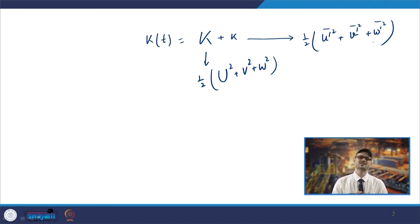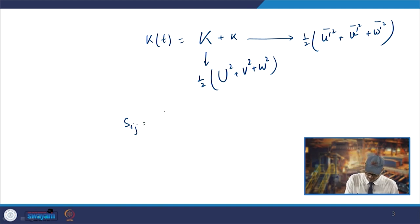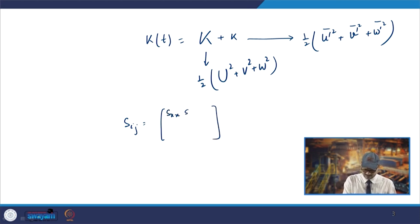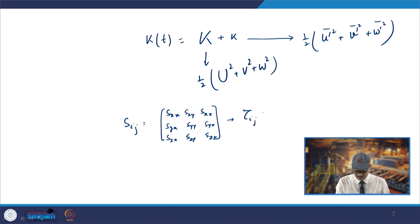Similarly, if we express stresses and mean rate of deformation as tensors, the rate of deformation S_ij is represented by a matrix: S_xx, S_xy, S_xz; S_yx, S_yy, S_yz; S_zx, S_zy, S_zz. And the stress tensor tau has components: tau_xx, tau_xy, tau_xz; tau_yx, tau_yy, tau_yz; tau_zx, tau_zy, tau_zz.